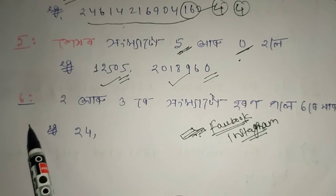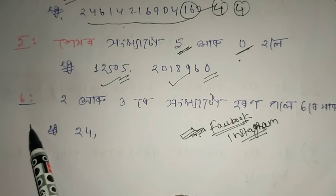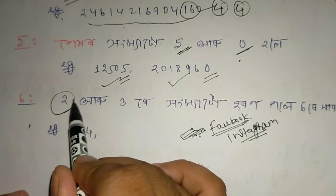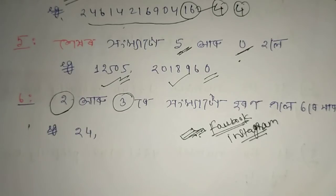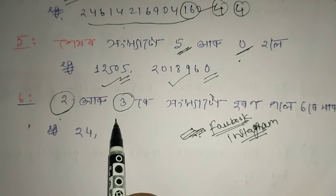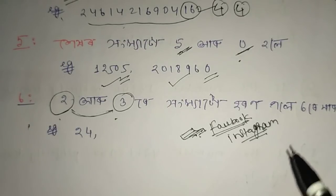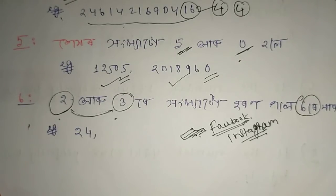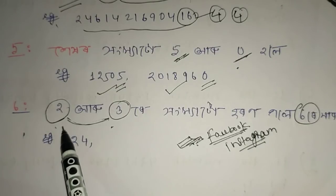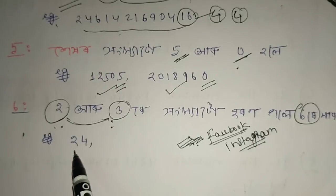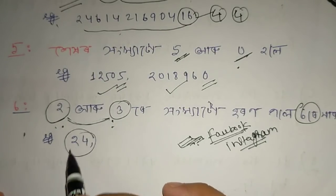Next, divisibility by 6. A number is divisible by 6 if it is divisible by both 2 and 3. This number must satisfy both the rule for 2 and the rule for 3 to be divisible by 6. It's clear. If a number is divisible by 2 and also divisible by 3, then it is divisible by 6.